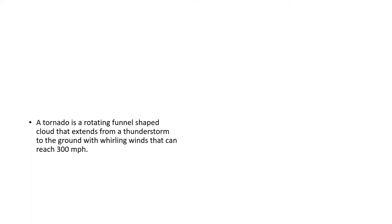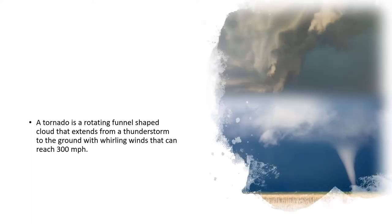A tornado is a rotating funnel-shaped cloud that extends from a thunderstorm to the ground, with whirling winds that can reach 300 miles per hour. This is a picture of the early formation, and this is when it is fully complete.